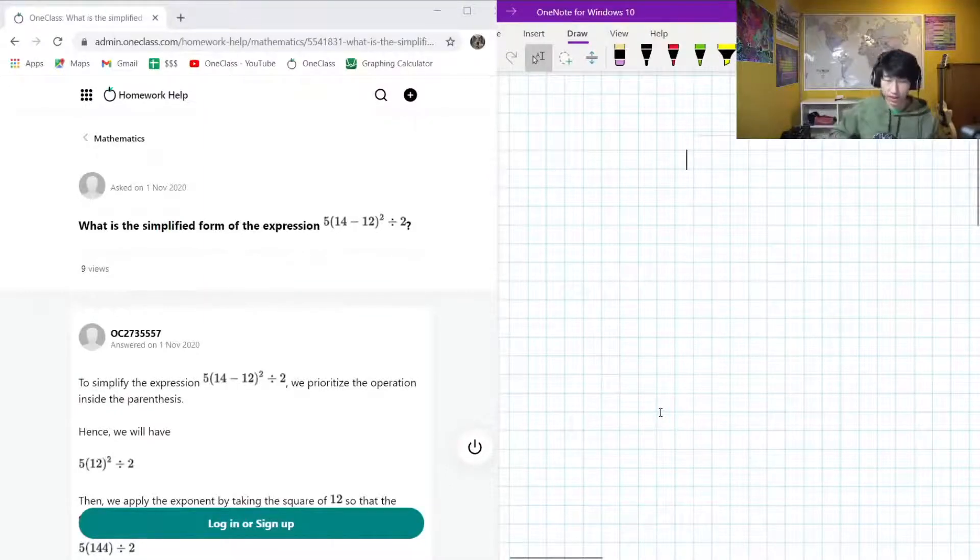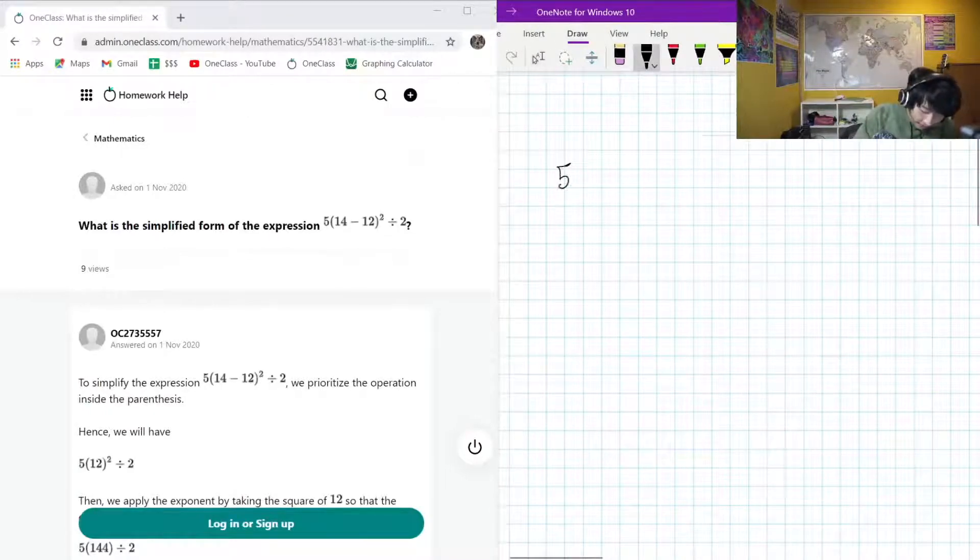Okay, so here is the next question that we have on the menu today. It is asking us what is the simplified form of the expression. Instead of reading that out, I'll write it out. So we have 5 multiplied in brackets, we have 14 minus 12, all of that is squared, and we divide this by 2.